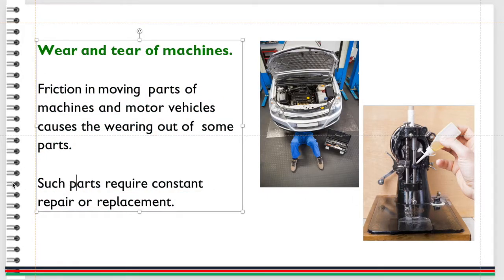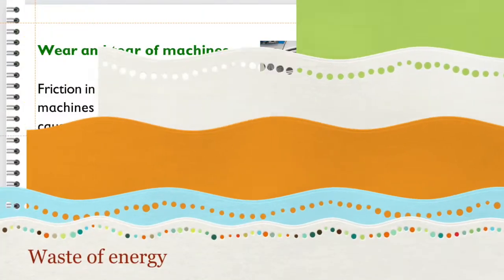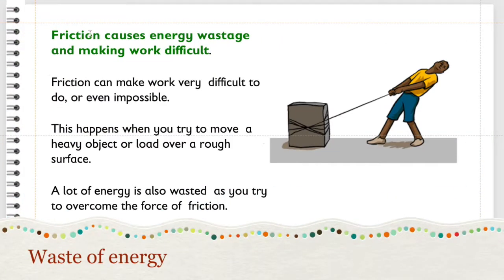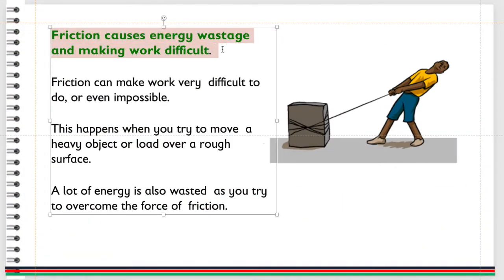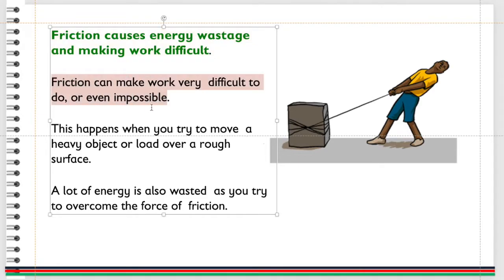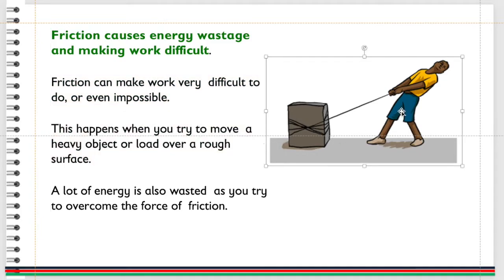Friction causes energy wastage and makes work difficult. Friction can make work very difficult to do or even impossible. This happens when you try to move a heavy object or load over a rough surface. A lot of energy is also wasted as you try to overcome the force of friction.